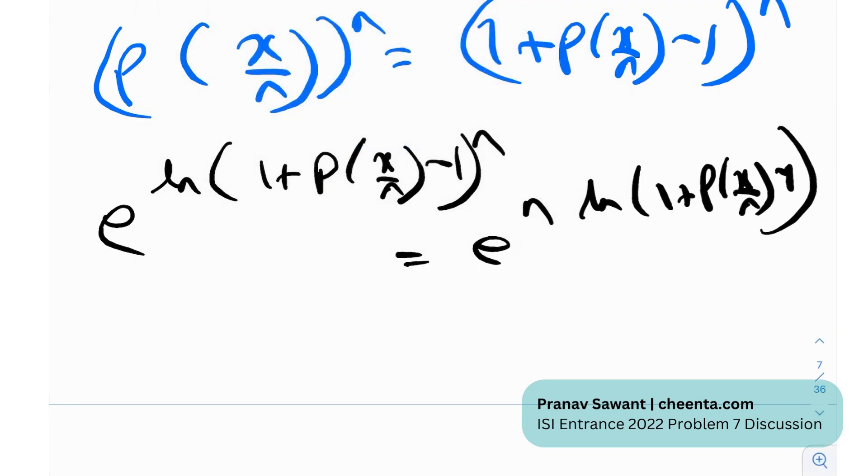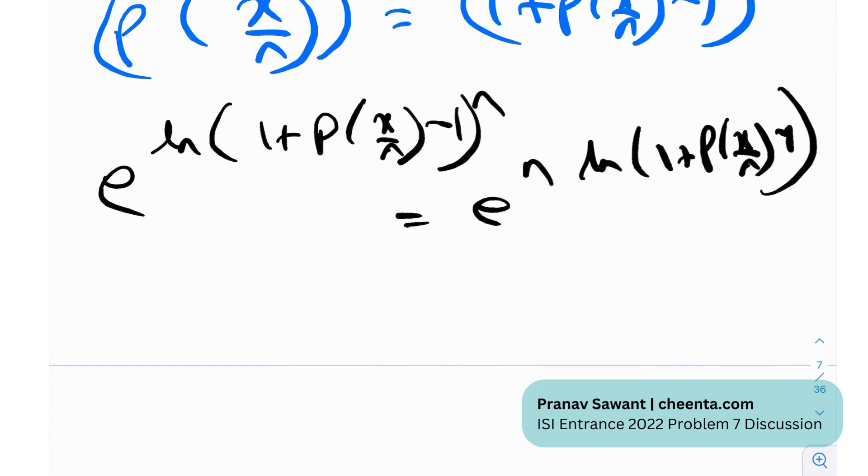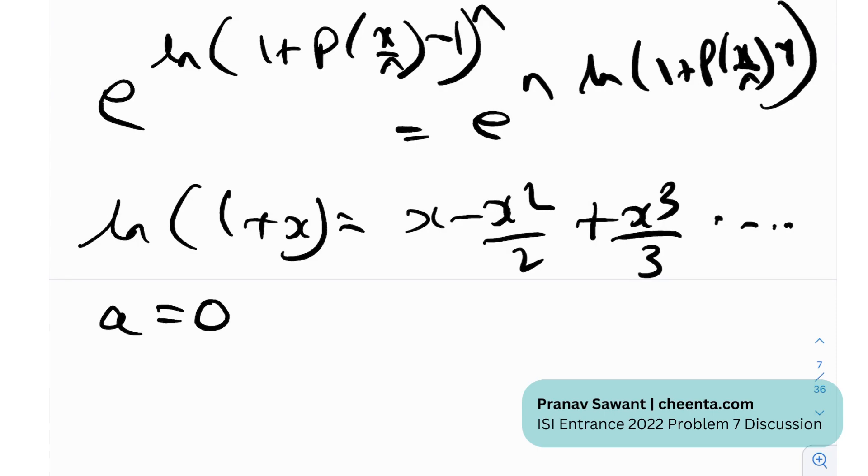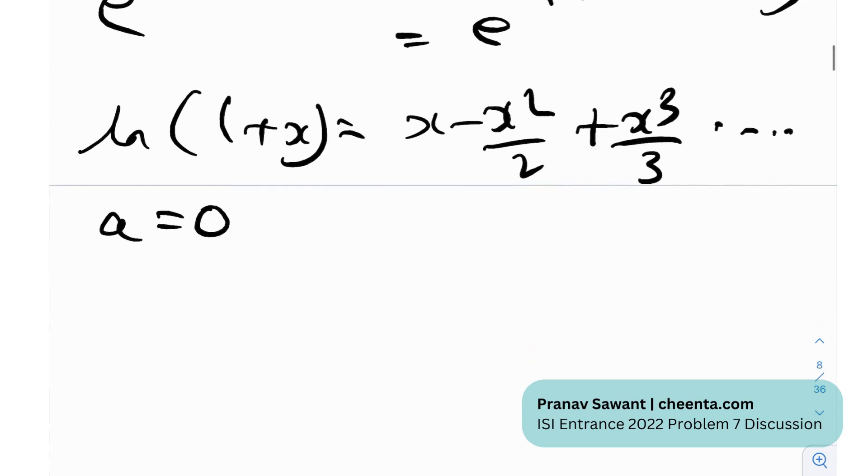Okay, now, what do we do next? So, there's something called as a Maclaurin series, the expansion of ln(1 + x). This gives us x minus x²/2 plus x³/3, and so on and so forth. This expansion of ln(1 + x) is called as a Maclaurin series. Maclaurin series is nothing but the Taylor series centered about a equals 0. So, if you know this expansion, this can actually become pretty trivial from now.